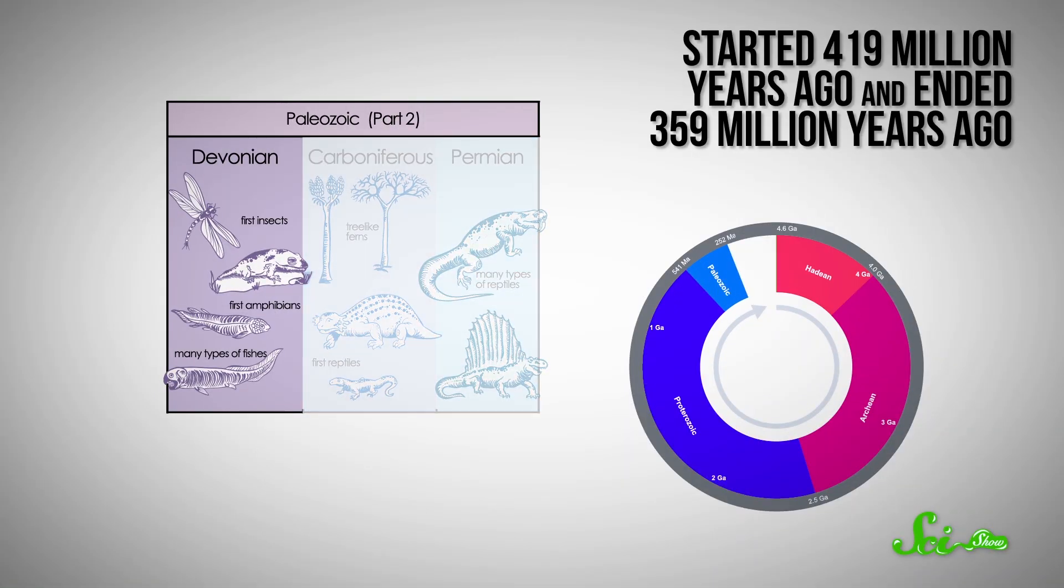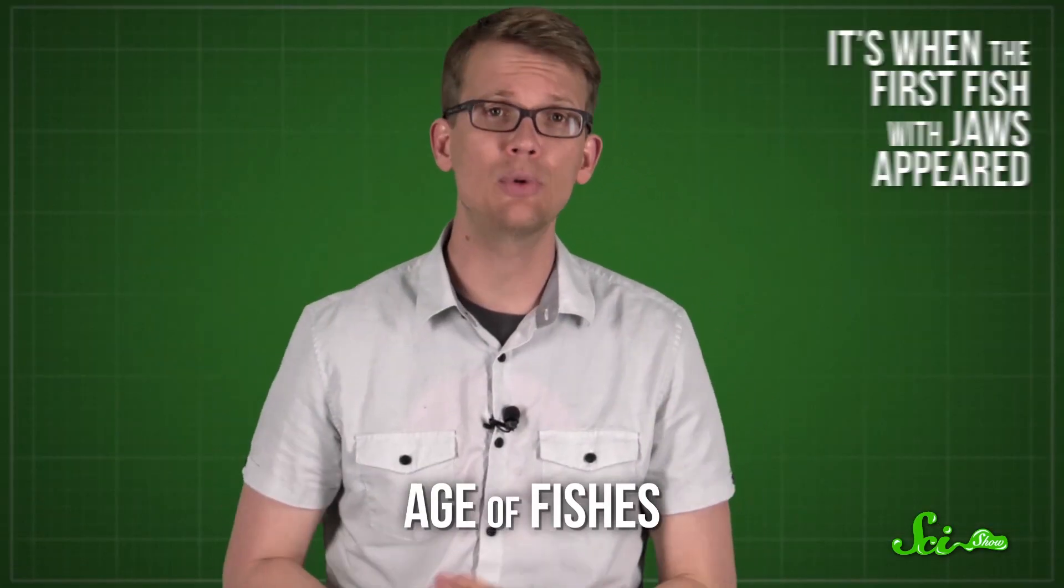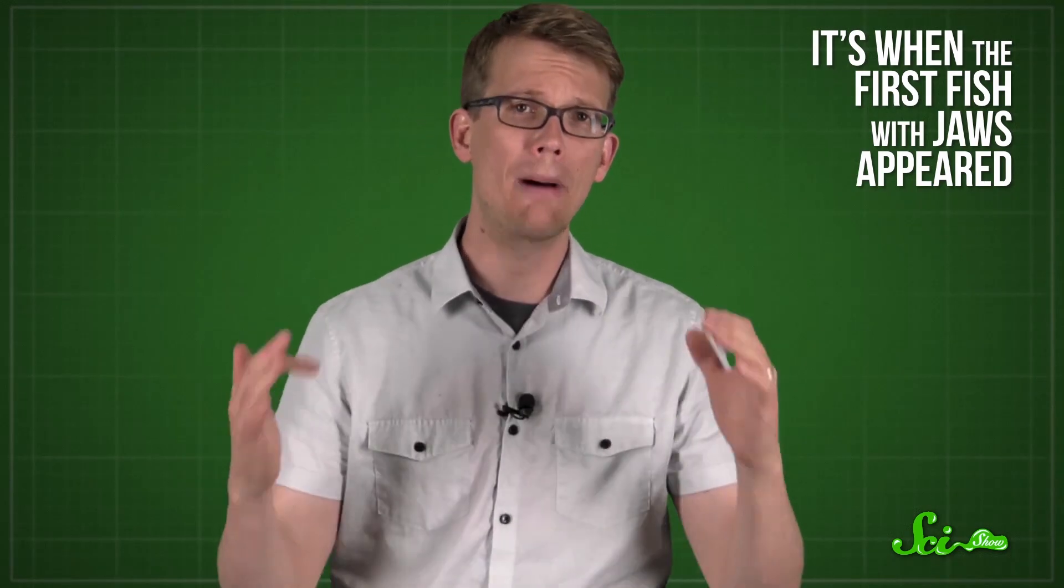The fourth period of the Paleozoic, called the Devonian, started 419 million years ago, and ended 359 million years ago. It's sometimes called the Age of Fishes, because it's when the first fish with jaws appeared, and it was followed by a lot of fish with jaws.